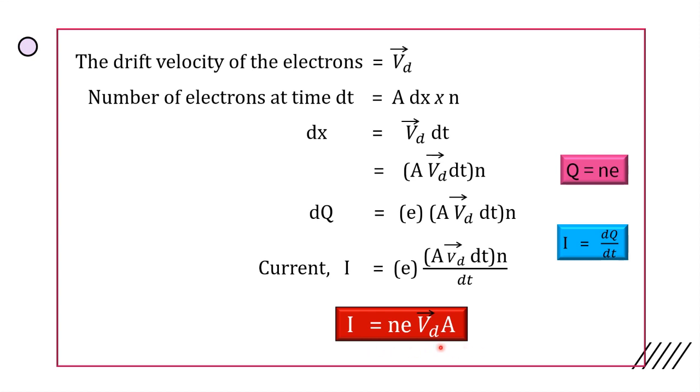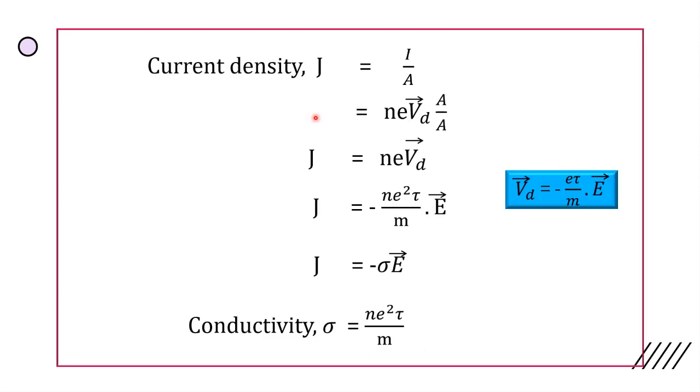This is the relation between current and drift velocity. Current density J is equal to current per unit area of cross-section. So it is i by A. And i is equal to n, e, Vd, A divided by A. So A gets cancelled and J is equal to n, e, Vd.